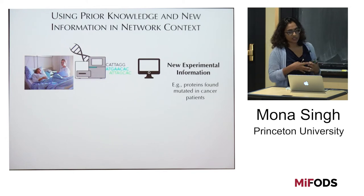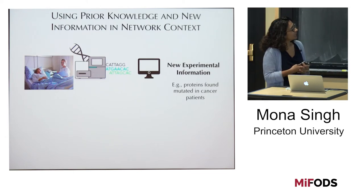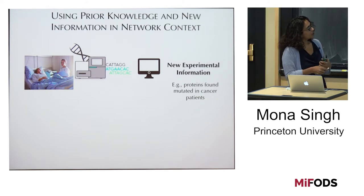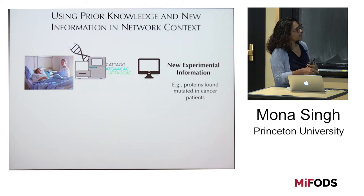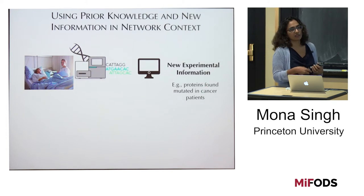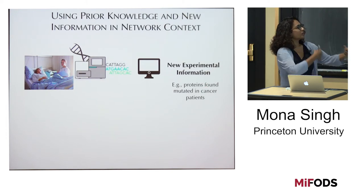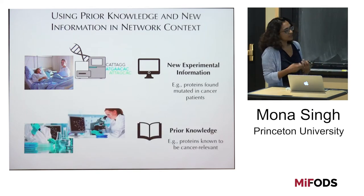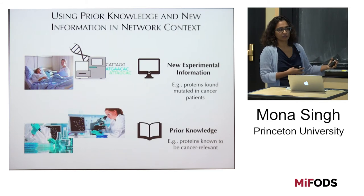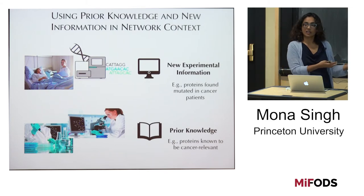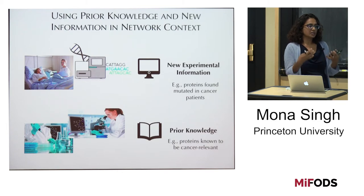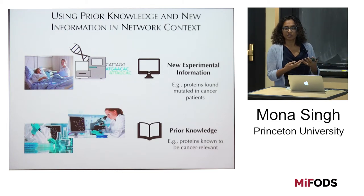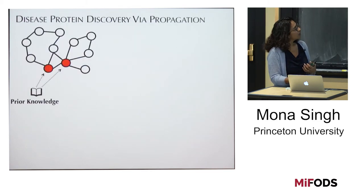For the last part, I'm still talking about discovering disease proteins in the context of networks. The methods I've told you about thus far consider new experimental information — proteins found mutated in cancer patients — and try to figure out which are important potential drug targets. But there's also prior information: proteins already known to be disease-relevant. We've used this primarily for validation, but maybe we should be using this type of information together rather than just as validation.